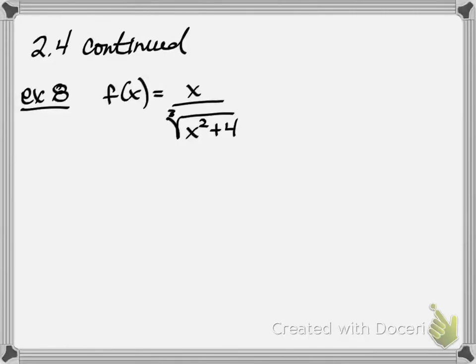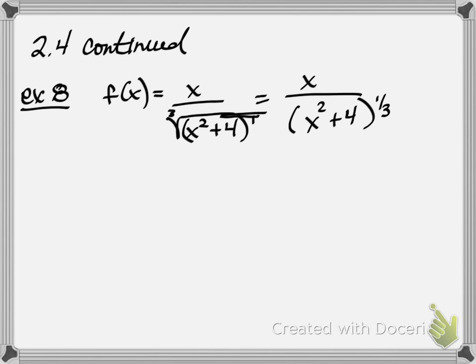We're going to wrap up section 2.4 today. When you look at this problem and want to take its derivative, it would be easier if we write the bottom as a power — to the first power here and the third root as one over three. I'm going to treat this as a quotient rule. You could take it to the top and treat it as a product rule, but let's do quotient rule.